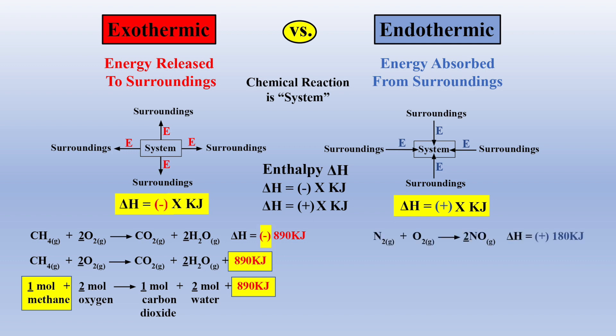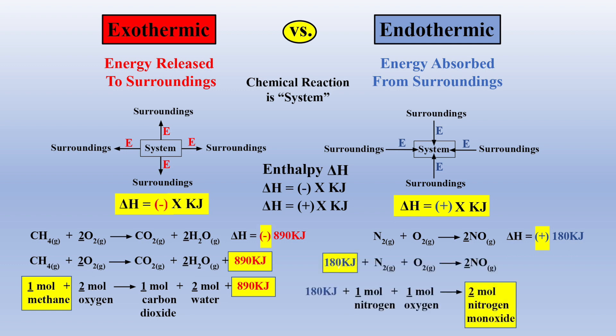An example of an endothermic reaction is the synthesis of nitrogen monoxide. Because the change in enthalpy has a positive value, we can think of this energy as a reactant. Thus, for every two moles of nitrogen monoxide formed, 180 kilojoules of energy are required. Again, it will be important to understand this relationship for stoichiometric calculations with energy.